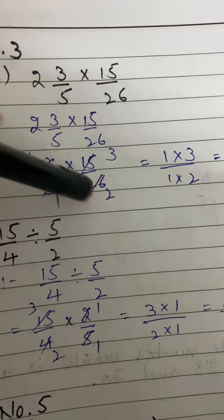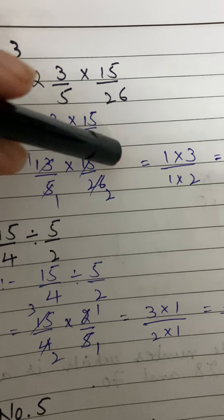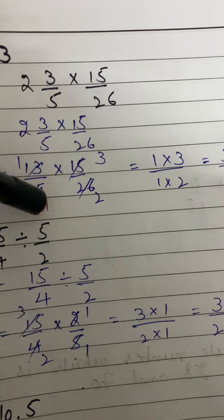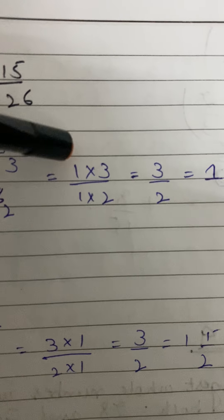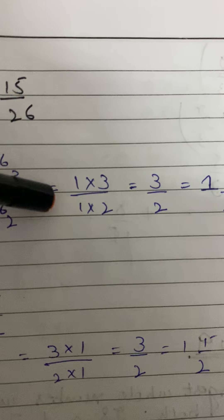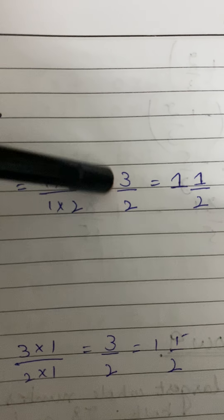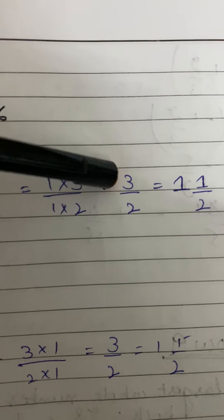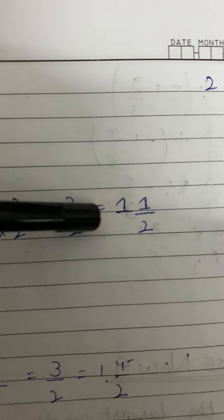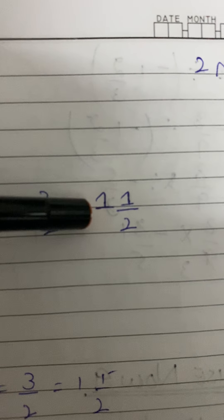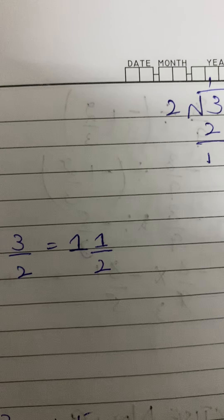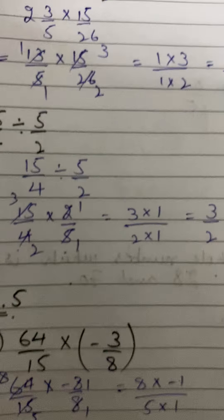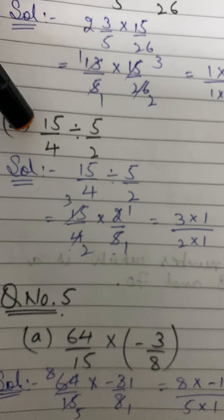Now cancel: 5 ones are 5 and 5 threes are 15; 13 ones are 13 and 13 twos are 26. We are left with 1 times 3 in the numerator and 1 times 2 in the denominator — giving 3 over 2. That's an improper fraction, so dividing gives the answer 1 whole 1 over 2.